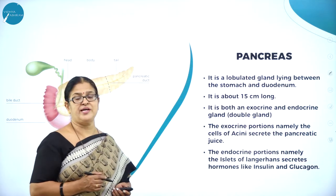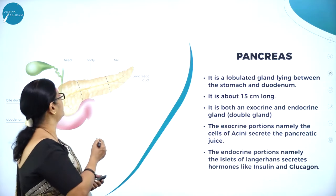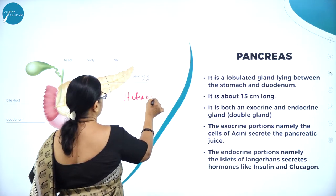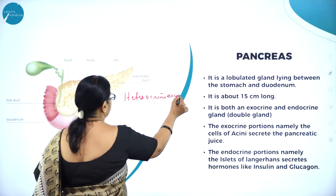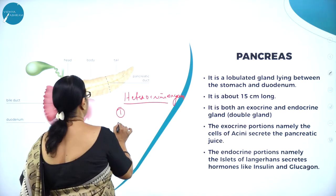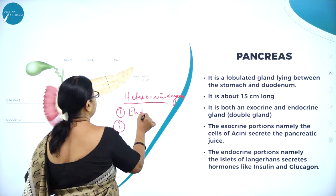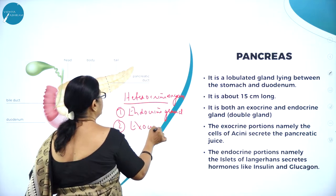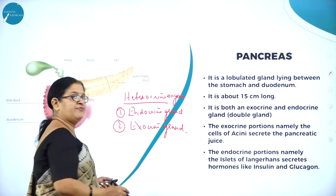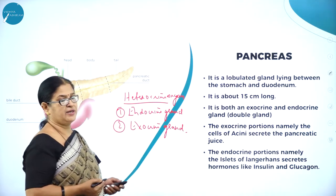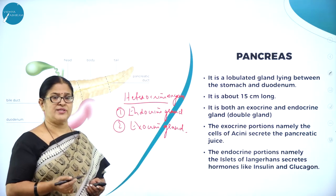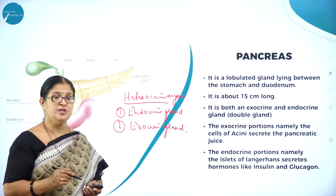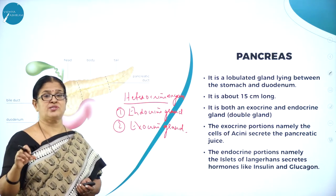Moving on to the next very important digestive gland called the pancreas. The pancreas is a heterocrine organ. We call it heterocrine because it functions as both an endocrine gland and an exocrine gland. Exocrine secretions are called secretions, not hormones, and they pass through pipe-like structures called ducts. Hence exocrine glands are called duct glands.